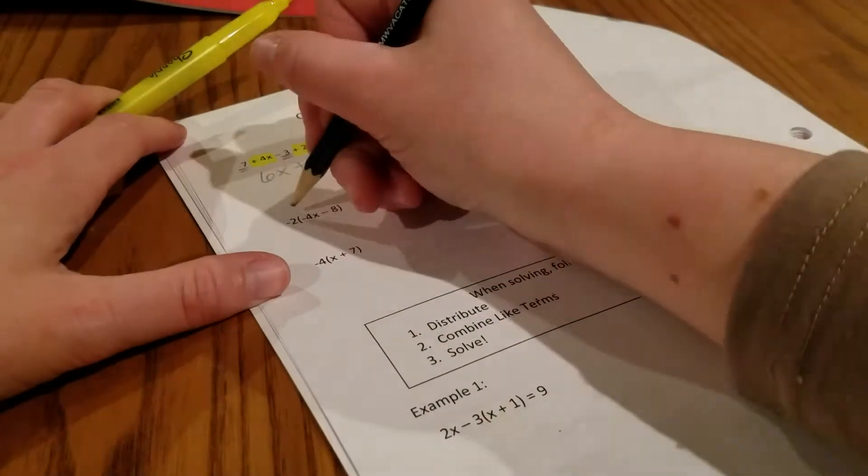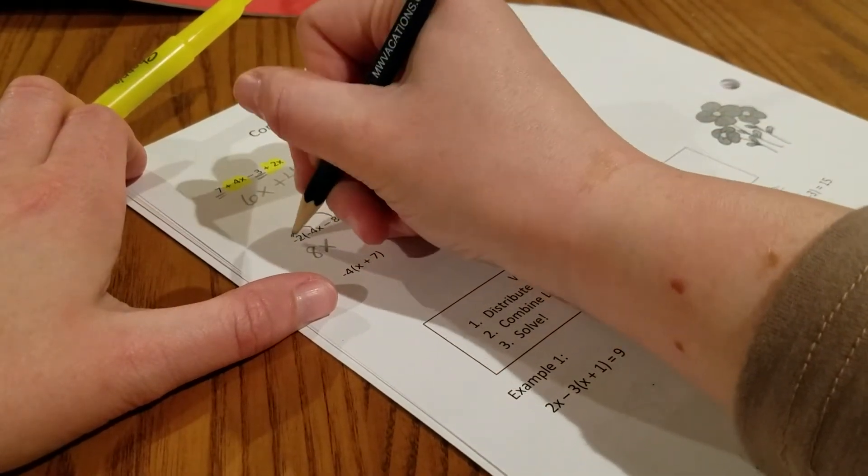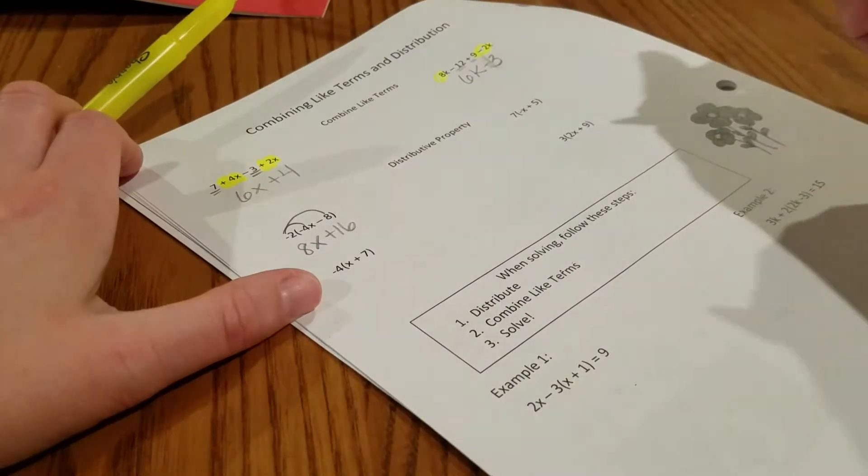Distributive property, just to remind you, is multiplying. Negative 2 times negative 4x is 8x. Negative 2 times negative 8 is positive 16.